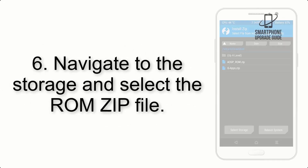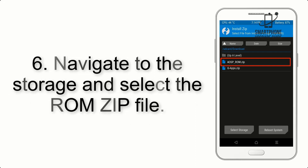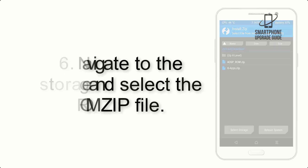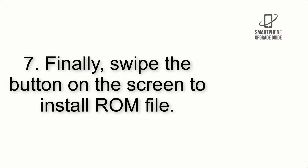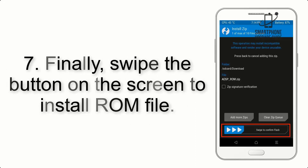Step 6: Navigate to the Storage and select the ROM ZIP file. Step 7: Finally, swipe the button on the screen to install the ROM file.